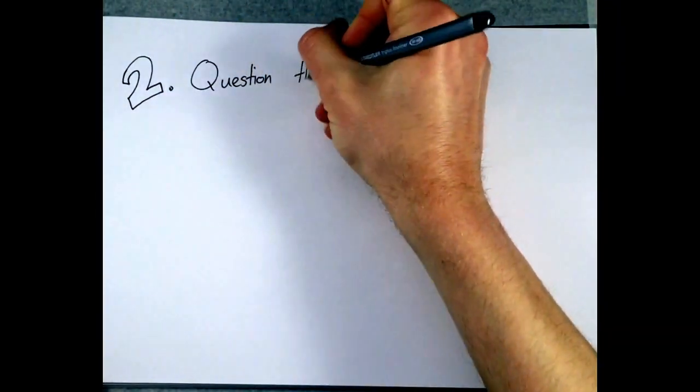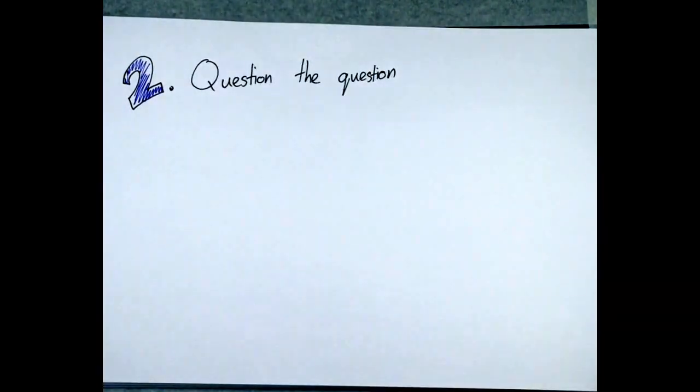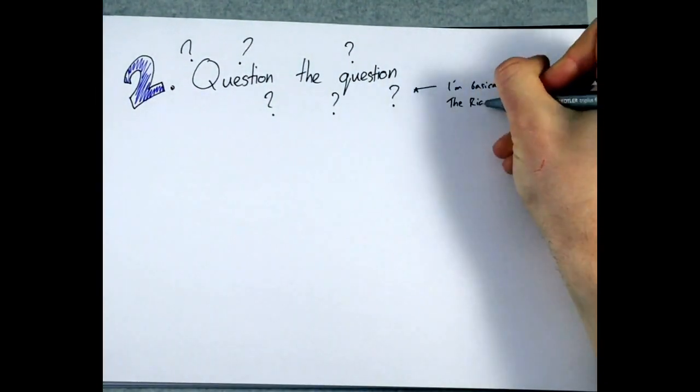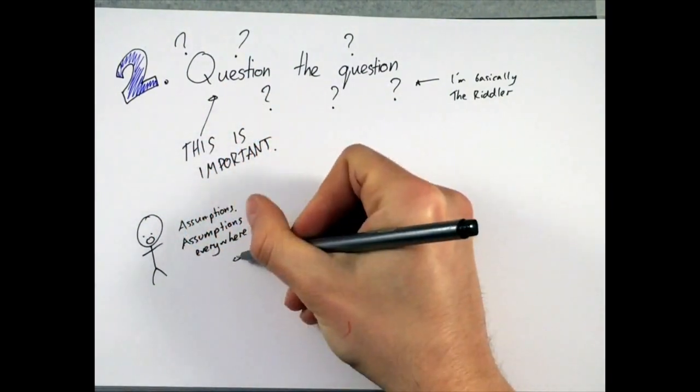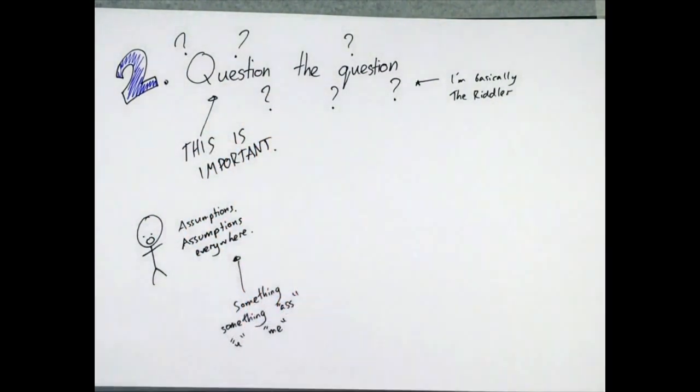Next, question the question. You'll hear this quite a lot, and you'll probably wonder what on earth it means. It's important to understand it, because it can be the key to getting a high mark. Every term in a question is ambiguous. Every question has hidden assumptions behind it. You can question these assumptions.